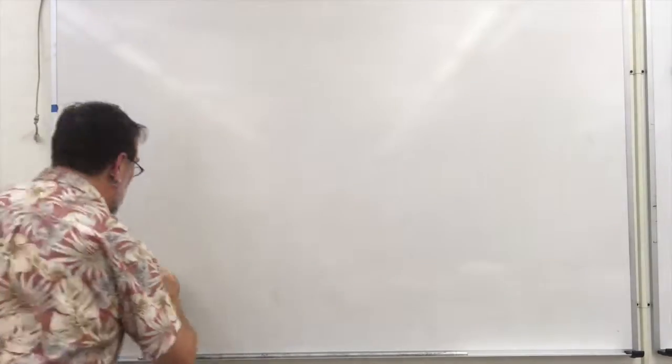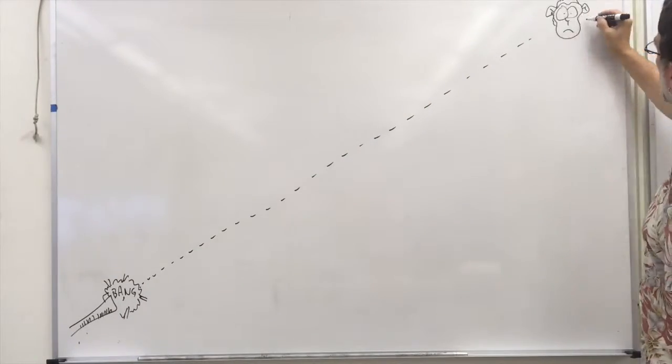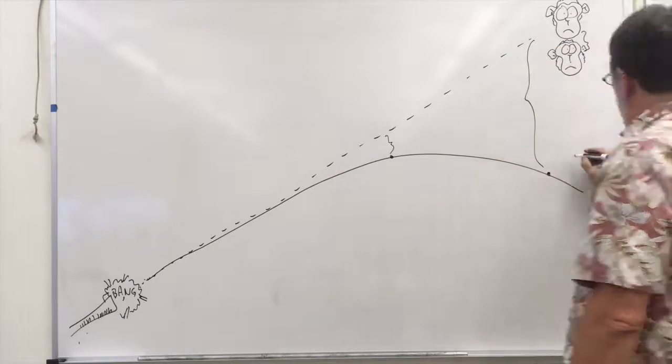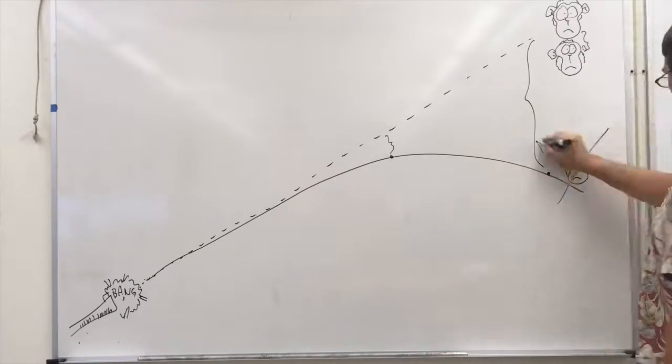Many students will correctly guess that you aim at the monkey because vertical and horizontal movement are independent. The monkey and the bullet will both drop at the same rate and meet up in midair. You've got an ex-monkey.